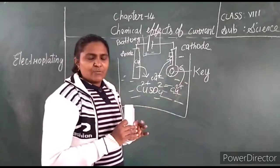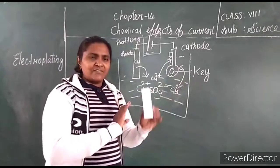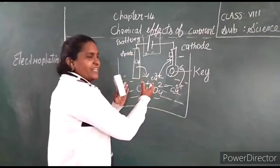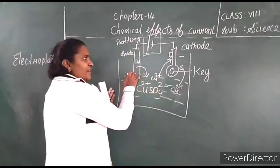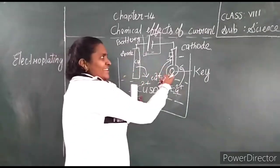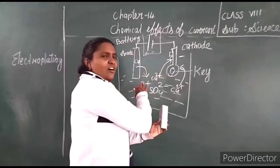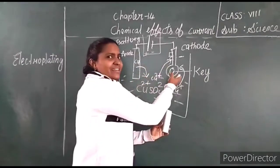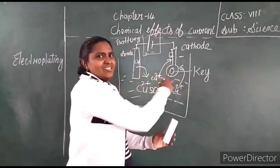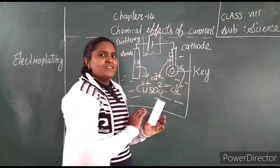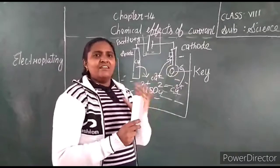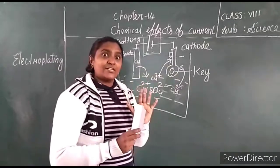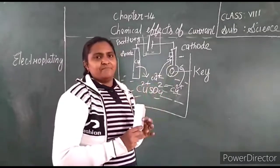What is electroplating? Coating of copper over the key — coating one metal over another. This is called electroplating.